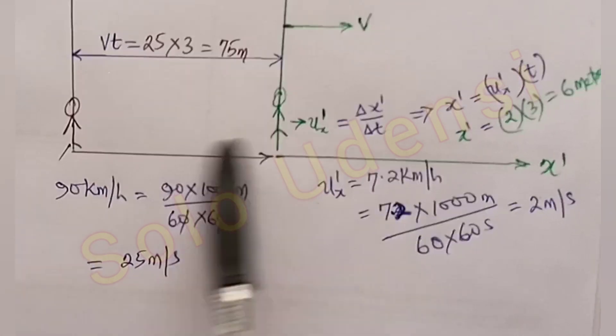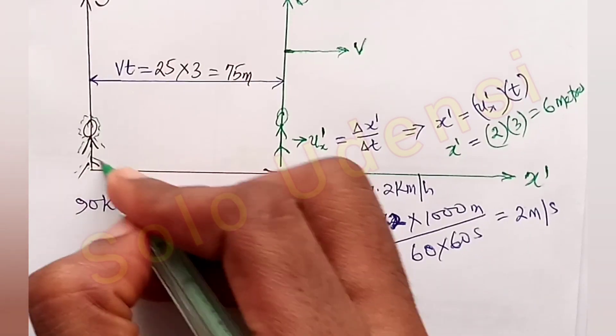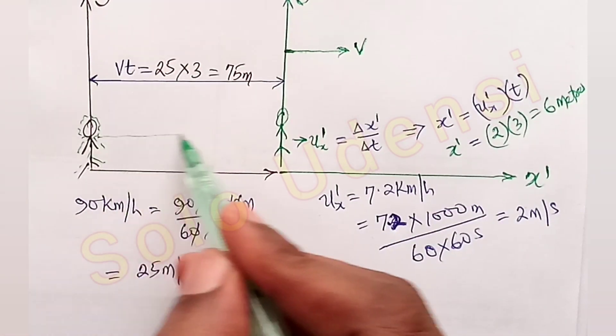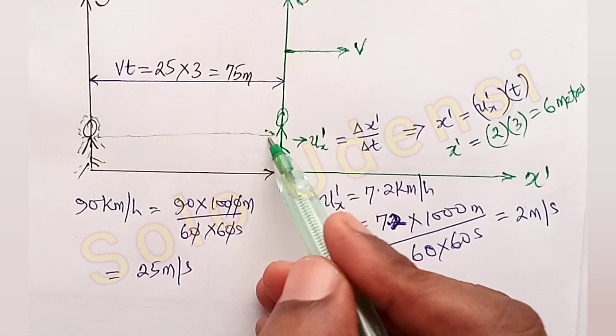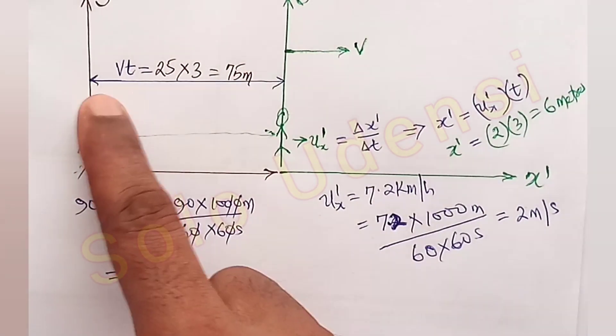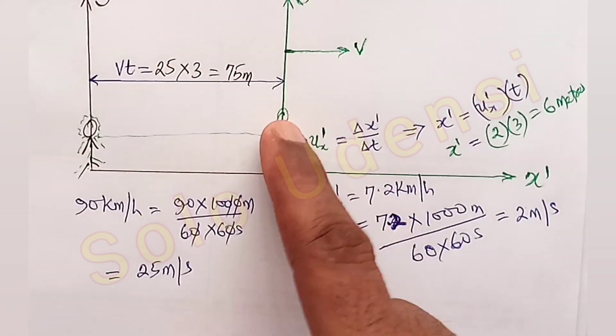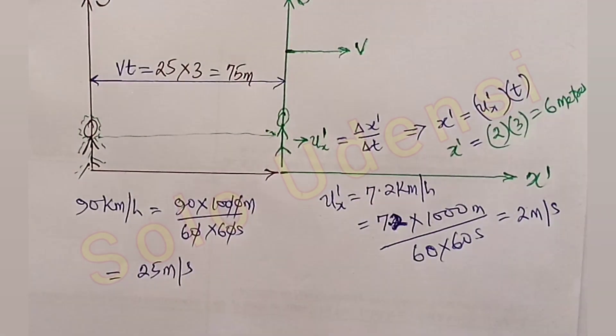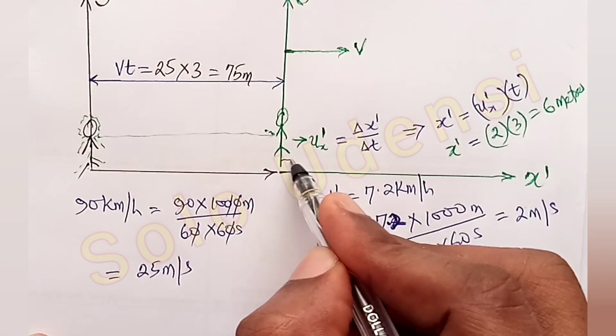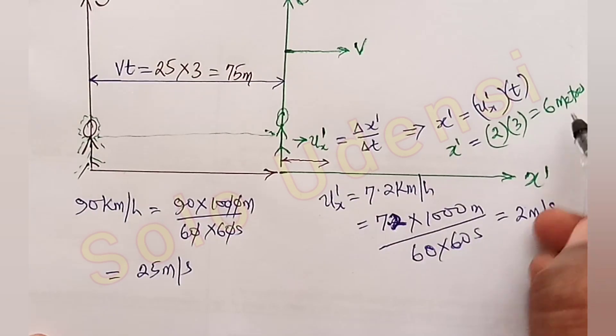So when they started, when both of them were here aligned, as the bus crossed, after 3 seconds it's here now. So at that time, the bus has traveled 75 meters, but this guy in the bus is also moving. After 3 seconds, he is somewhere here and we have calculated it to be 6 meters.